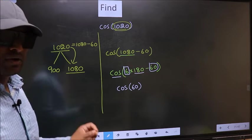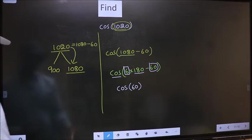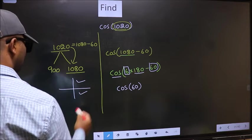And all the even multiples of 180, they lie either in the first or in the fourth quadrant.